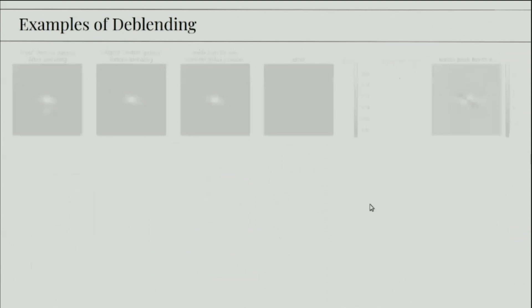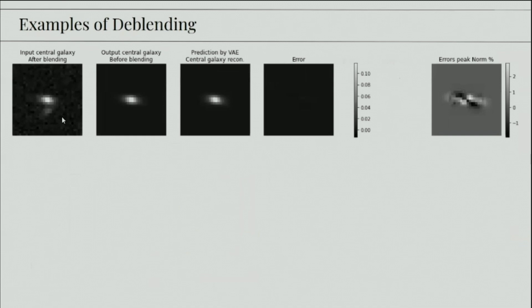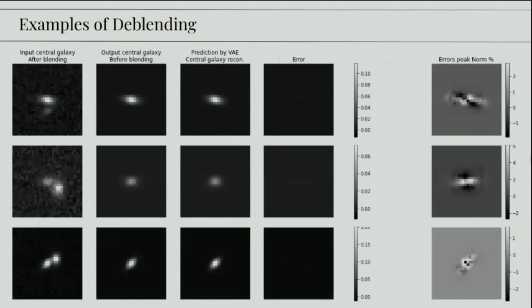So let's look at some examples now. Here, the leftmost image shows the blended galaxy, so we can see that there's number one and number two. The second image shows this central galaxy before it was blended. This is the prediction for the central galaxy by our VAE. This is an error between the two and then the error normalized by the peak. And we can look at some other examples. And it seems that the VAE is able to reconstruct the central galaxy very well.